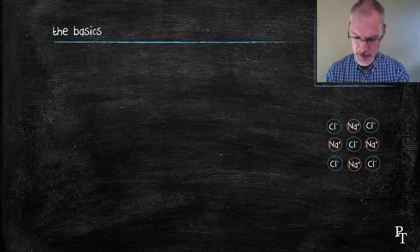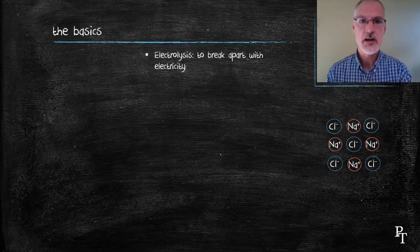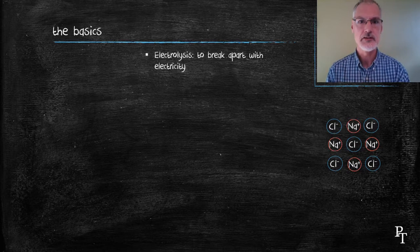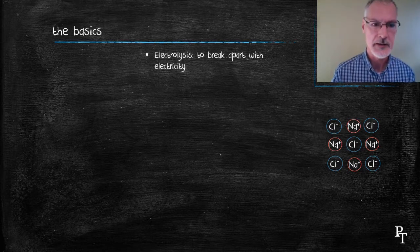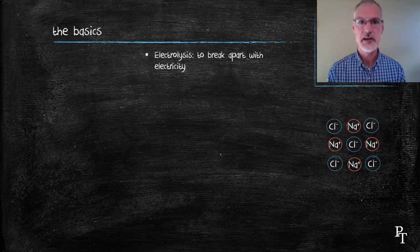First, the basics about how it operates. The definition of the word electrolysis is to break apart using electricity. Lysis means to break. In my particular example, I'm going to take sodium chloride, or salt, and break it down into sodium and chlorine gas.